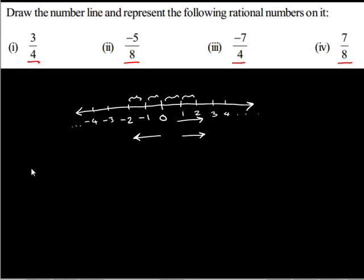Now, the first problem is 3 upon 4. First, we will draw the number line indicating the point 0 and the integers on it: 1, 2 and 3. On the left hand side, we have negative 1, negative 2 and negative 3.